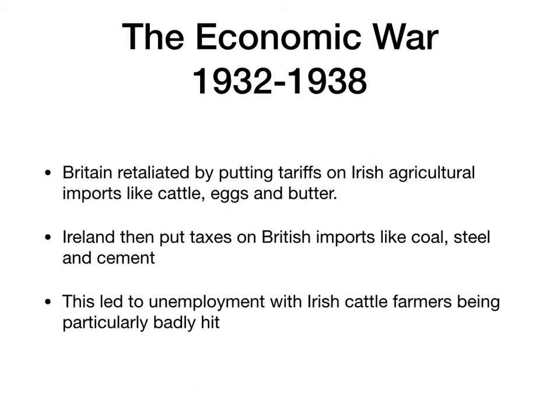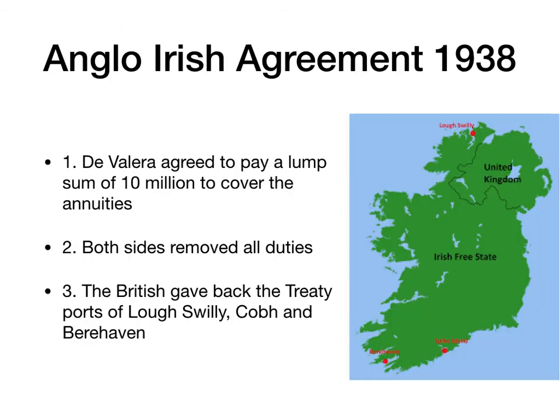Unfortunately this really affected the people of Ireland, leading to mass unemployment with Irish farmers being particularly badly hit. In 1938, with war looming on the continent, Neville Chamberlain, who was Prime Minister of Britain, was eager to bring about a resolution to the conflict with the Irish. So they signed the Anglo-Irish agreement in 1938. De Valera agreed to pay a lump sum of £10 million to cover the annuities. Both sides agreed to remove all duties on products, and the British gave back the treaty ports of Lough Swilly, Cobh and Berehaven.